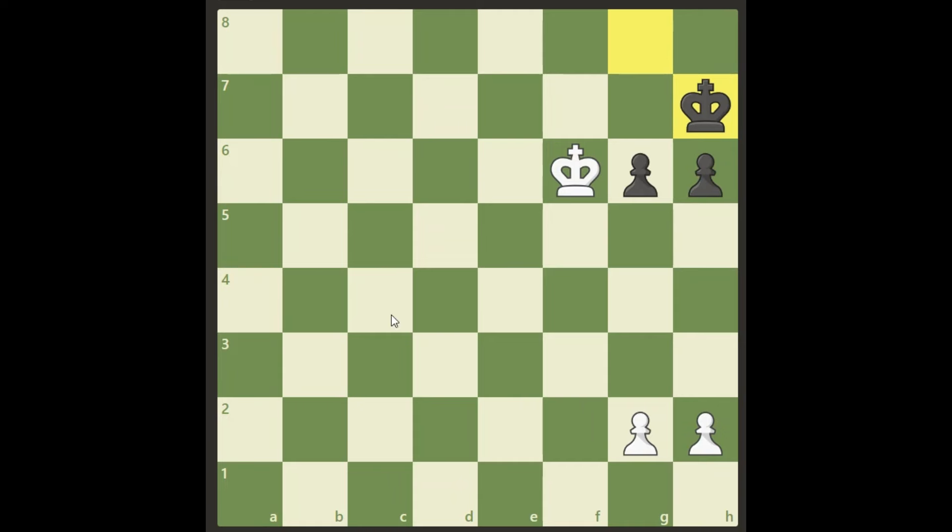Okay, here we go. So if we play h4 here, this is a draw. Black will answer with h5, he has this square for his king to go back and forward. We will not get any opposition. I mean if we try to do something like this to trap him, he will simply play g5 and we don't come any further here.